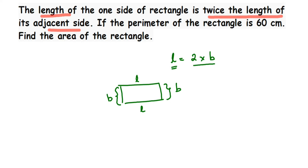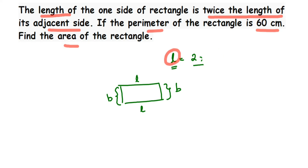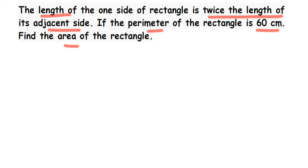We got one relation: L = 2B. One more thing given is that the perimeter of the rectangle is 60 centimeters. So there are two relations we have to use to find the area. To find the area, we first have to find what the length and breadth are, and once we know them, we can find the area.